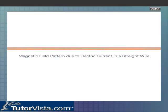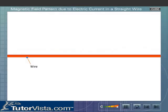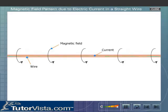Magnetic field pattern due to electric current in a straight wire. Current flowing through a wire produces a magnetic field around it. This effect is known as the magnetic effect of current.